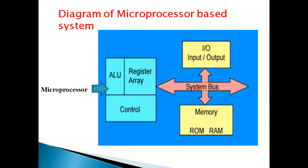Third one is system bus. It is a communication path between microprocessor and I/O devices. It is a group of wires to carry data.